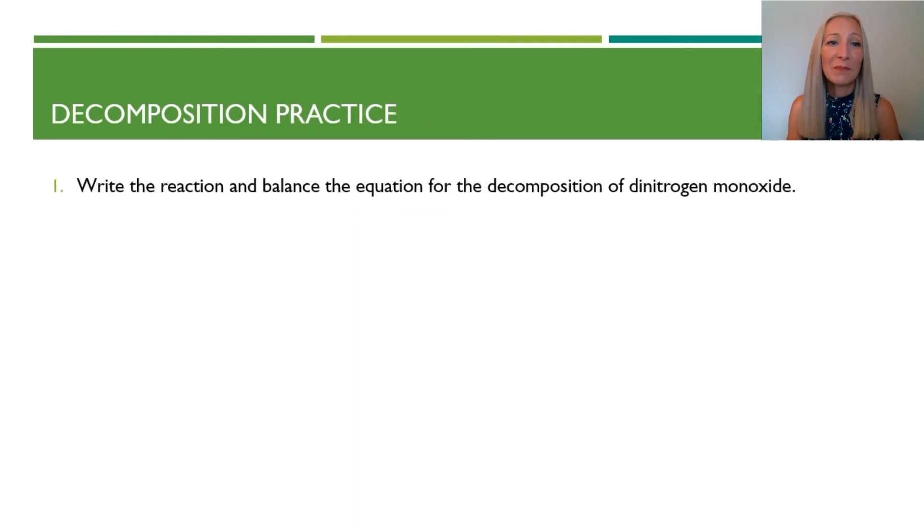Let's try another sample problem. Write the reaction and balance the equation for the decomposition of dinitrogen monoxide. Now, dinitrogen monoxide is laughing gas, which is commonly used as an anesthetic. So this is a covalent compound. We know this because we have two nonmetals bonded to each other. Nonmetals want electrons. So when they're around other nonmetals, rather than taking electrons, they share them.